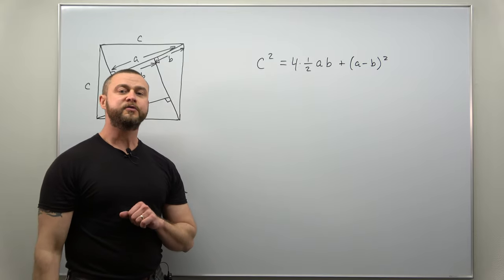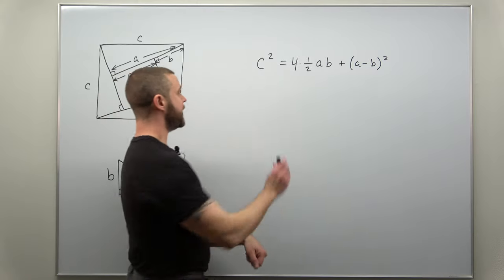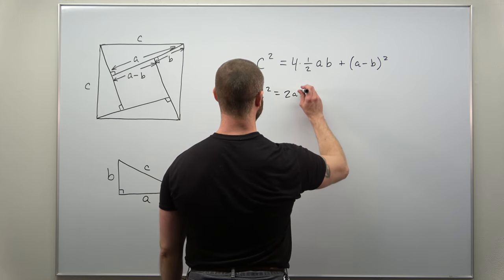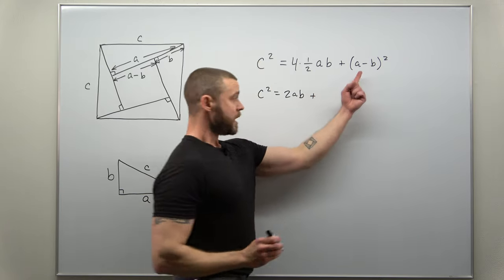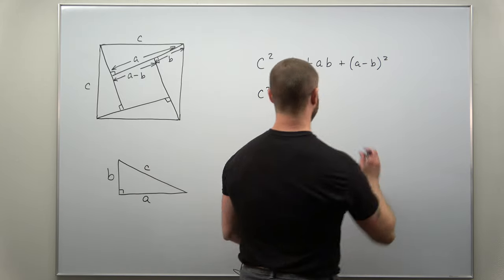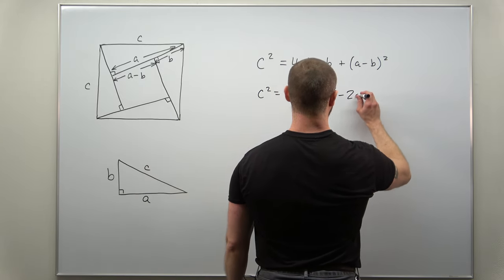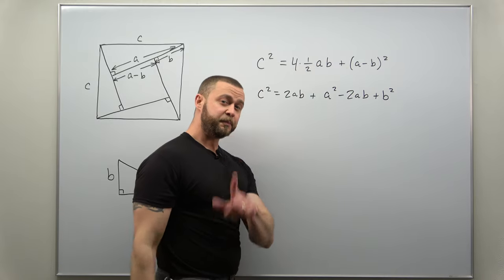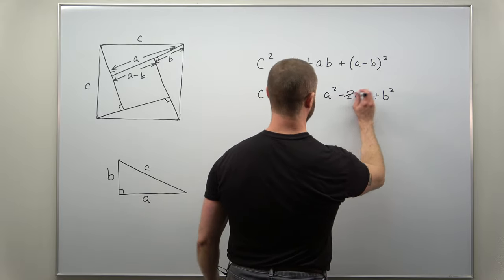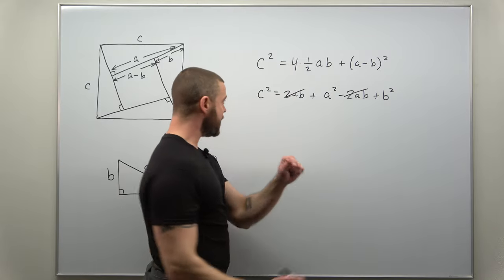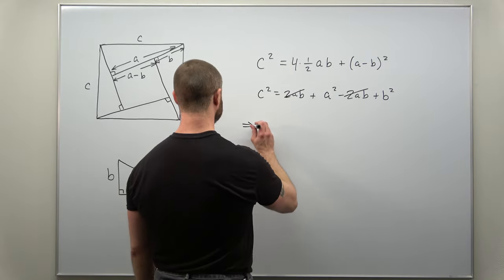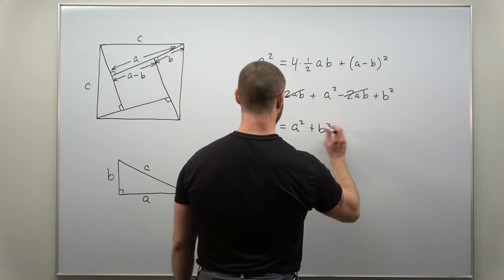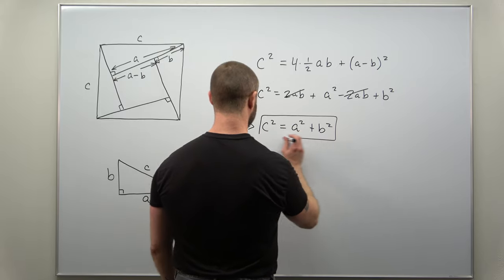And from here we just multiply out and simplify. Left side is going to be C squared. Here we get 2AB. And if you expand that properly you'll get A squared minus 2AB plus B squared. Subtract the 2ABs out, and what we get is that A squared plus B squared does equal C squared.